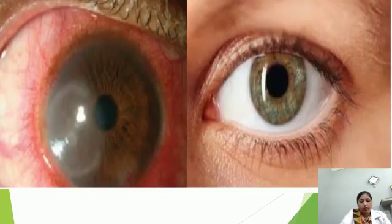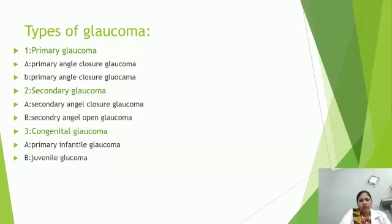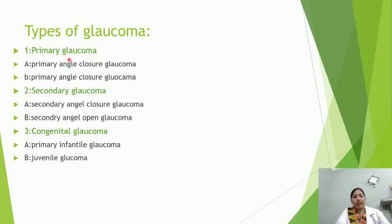This is the normal eye and this is the glaucomatous eye — redness of eye and increase in intraocular pressure. The types of glaucoma include primary glaucoma, secondary, and congenital.